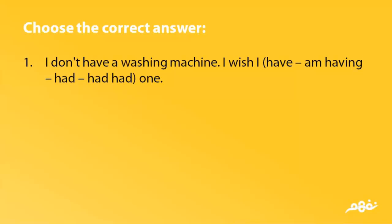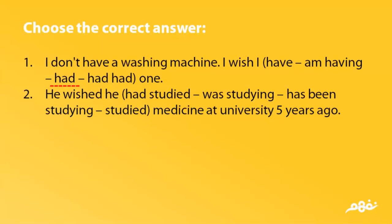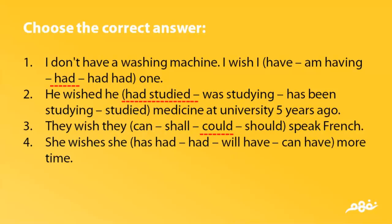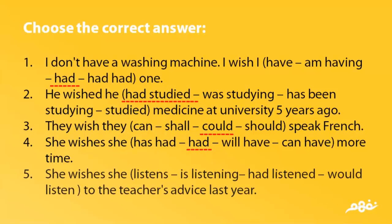Choose the correct answer. 'I don't have a washing machine' — I wish I had one. 'He wished he had studied medicine at university' — five years ago. 'They wish they could speak French.' 'She wishes she had more time.' 'She wishes she had listened to the teacher's advice.'